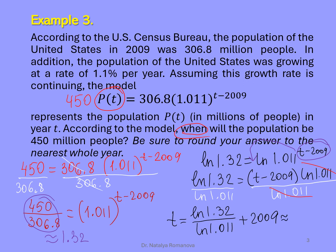Using technology, we can find this value. It would be T equals 2034. So in 2034, the population in the USA will be 450 million people.